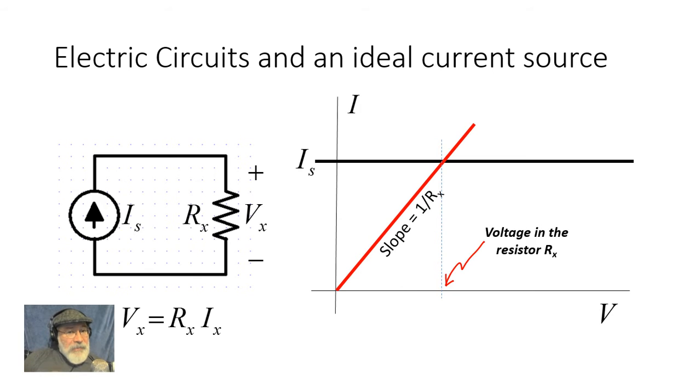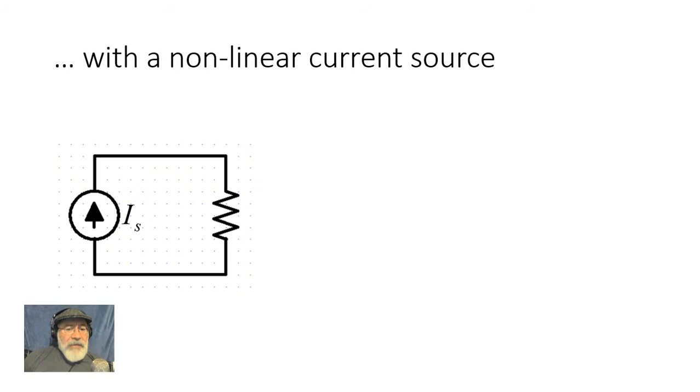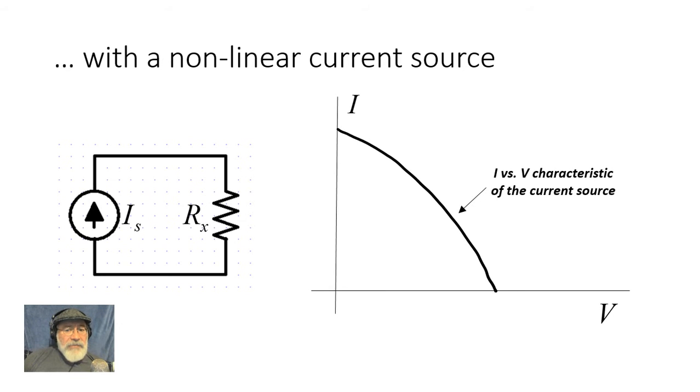But I've said that our permanent magnet does not behave as an ideal current source, but as a real nonlinear current source. So let's analyze a circuit, an electric circuit, with a current source that has not the ideal characteristic, but rather it is far from ideal IV characteristic. That is the current source.